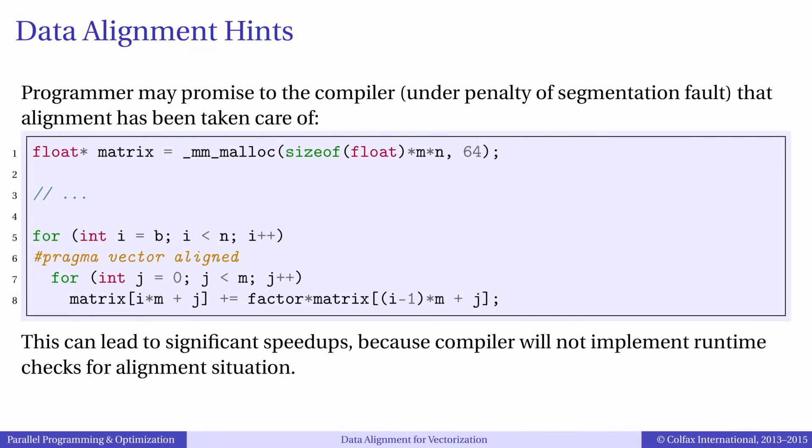When you need alignment in multidimensional arrays, you have to take extra measures in addition to using special allocators. Specifically, you need to make sure that the size of the inner dimension in your multidimensional array is a multiple of aligned value, for example 64 bytes.